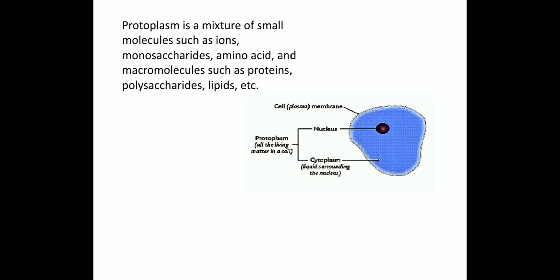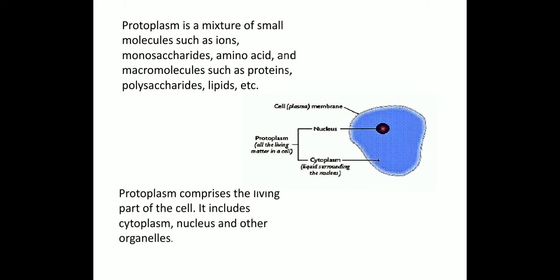You can see in this image: inside the cell membrane, the nucleus is present — the black dot — and the bluish part is the cytoplasm. The nucleus is also living matter because it has DNA and is the control center of the cell. Both nucleus and cytoplasm together comprise the protoplasm, which includes the living part of the cell — cytoplasm, nucleus, and other organelles.